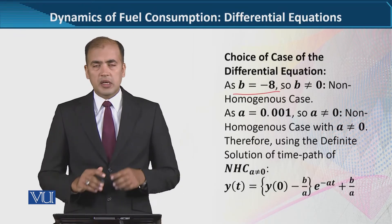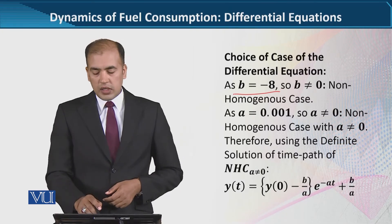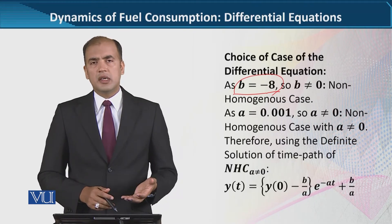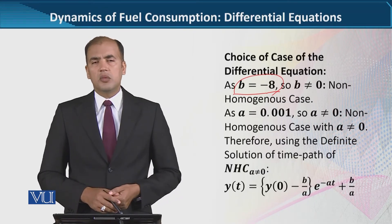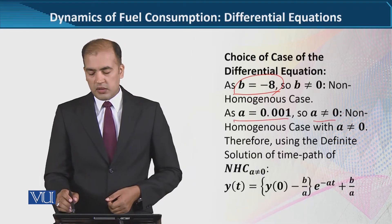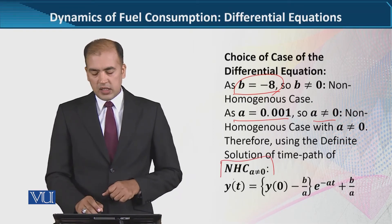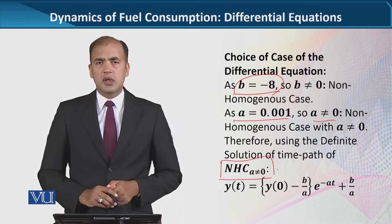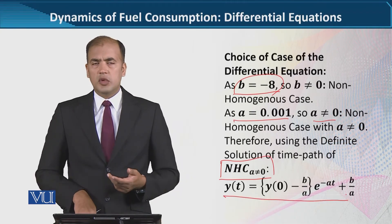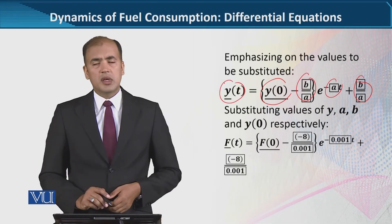After that, we will start with b and decide whether this is a homogeneous or non-homogeneous case. The value of b is minus 8, which is not equal to 0, so we are dealing with a non-homogeneous case. The value of a is also not equal to 0. So we have both values as non-zero — this is a non-homogeneous case where a is not equal to 0. The formula for this case is noted and emphasized.